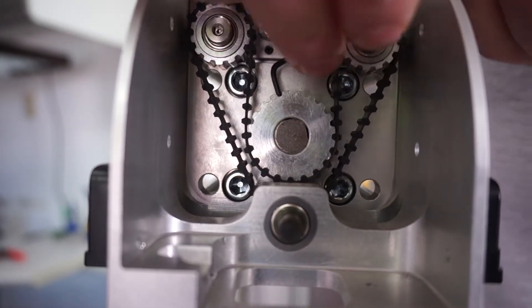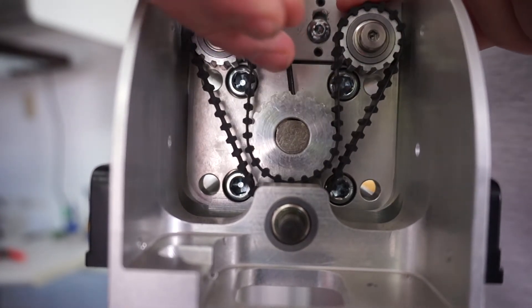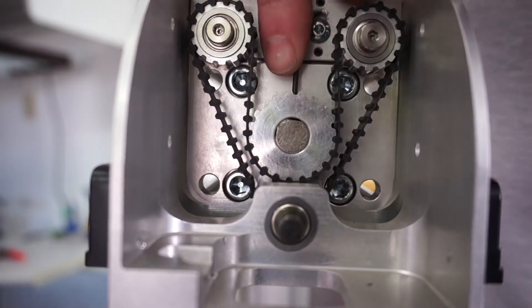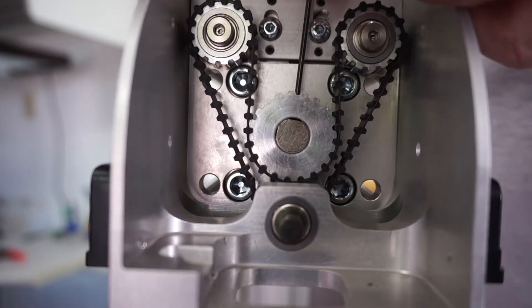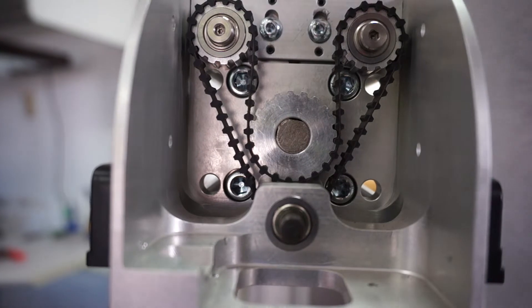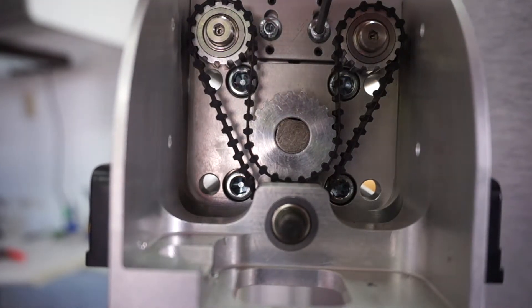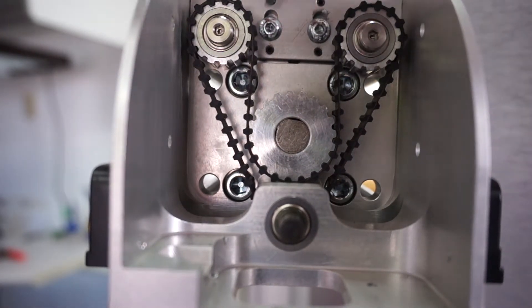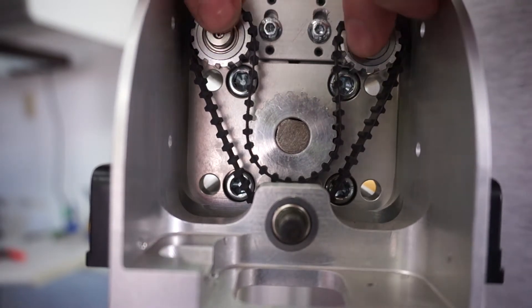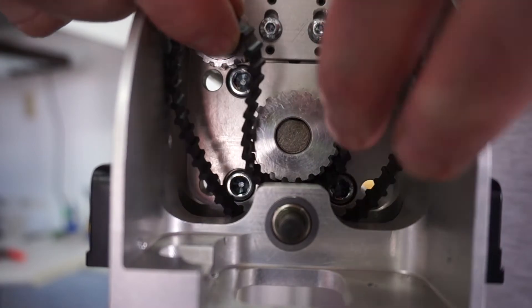I'm going to loosen this big cogged pulley here. I'm also going to loosen up this bracket. This is to adjust the belt in or out. I'm going to loosen that so I can get the belt off.